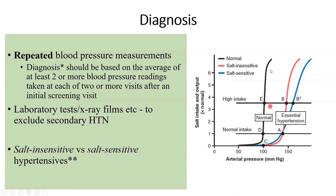The graph shows this clearly. The black curve represents a normal person's response to high salt intake. Starting from normal intake at point D and increasing salt, the normal person simply excretes the extra salt — the curve moved nicely vertically, blood pressure barely changed, and the kidneys expelled the extra salt and water.